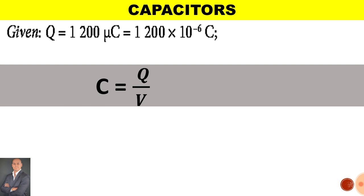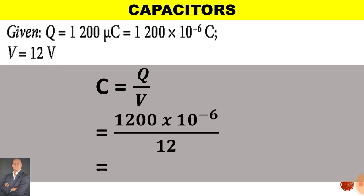So the charge is 1200 times 10 to the minus 6 divided by the voltage of 12 volts and we end up with 100 microfarad.